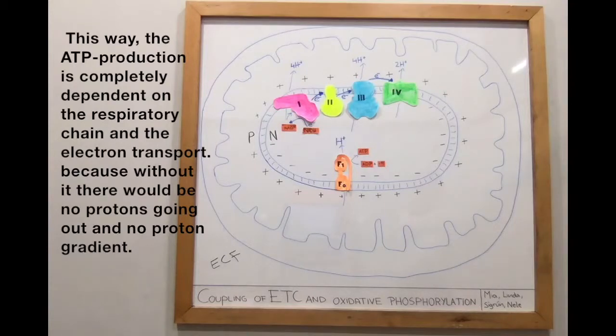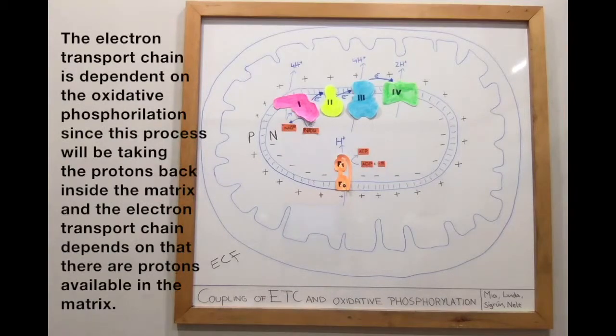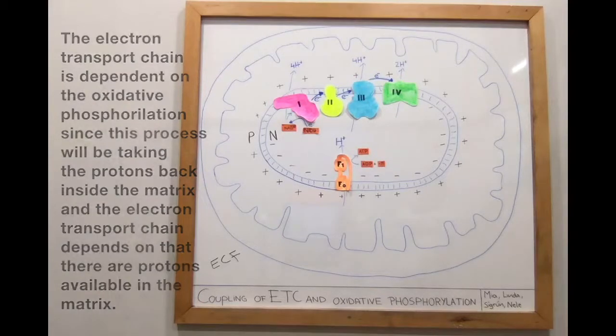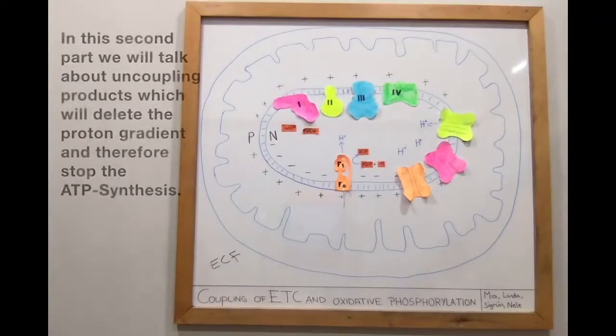The electron transport chain is dependent on the oxidative phosphorylation, since this process will be taking protons back into the matrix. The electron transport chain depends on there being protons available in the matrix. In this second part, we will talk about uncoupling products which will delete the proton gradient and therefore stop the ATP synthesis.